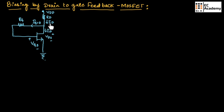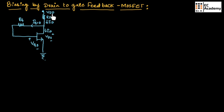Here, ID is the current flowing through the drain terminal. Since IG is equal to 0, the same current will flow through this branch as you can see here. VGS is the gate-to-source voltage, VDS is the drain-to-source voltage, and VDD is the power supply. VGS will be the input voltage and VDS will be the output voltage.